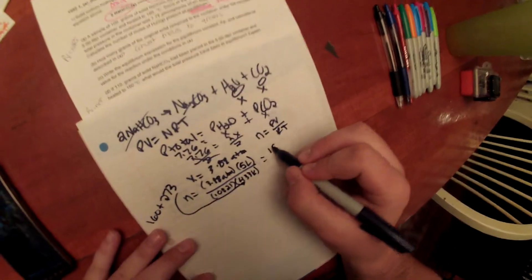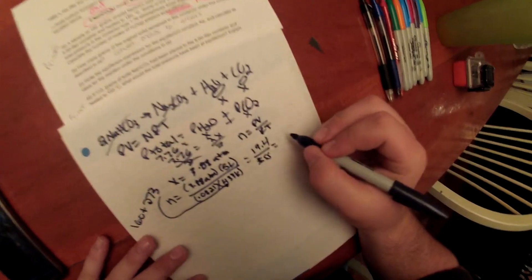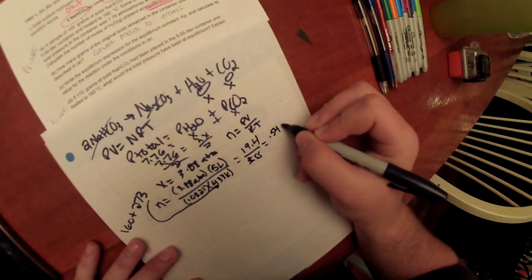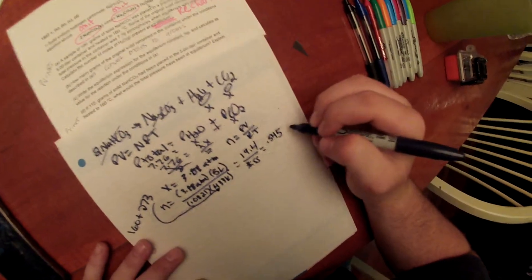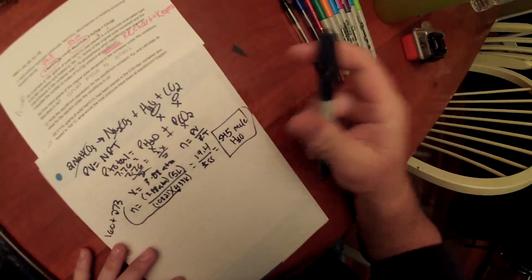So now we have 19.4 over 35.55, which gives us a final answer of 0.545 moles of H2O. And that is our solution for question A.